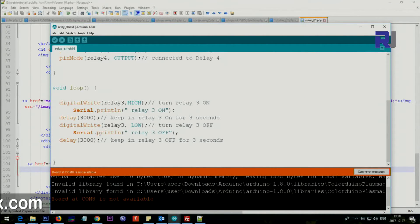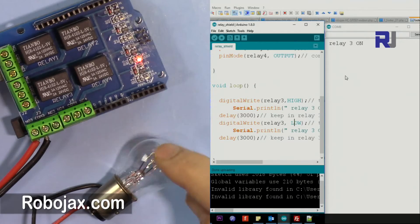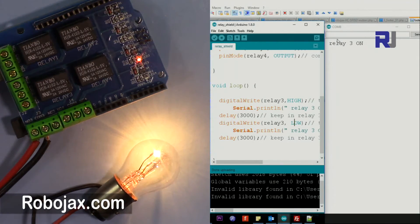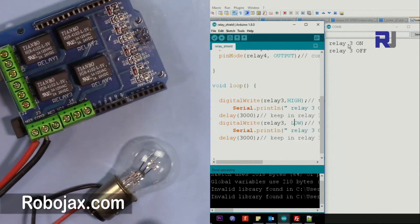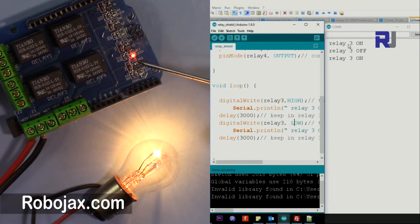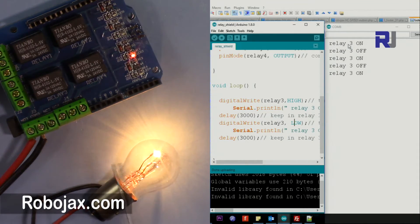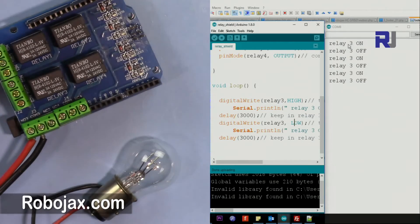So this will now apply. So I'm gonna upload the code and show you. So I'm uploading the code now and you will see the text here, and also you will see the activity here. So now it says relay 3 on, and here this is on. Also you can see here the LED 3 is on.